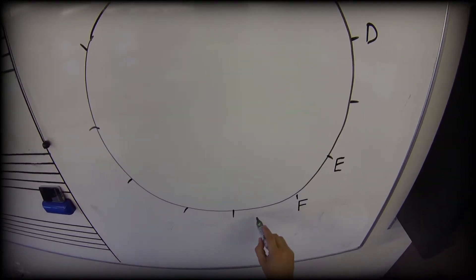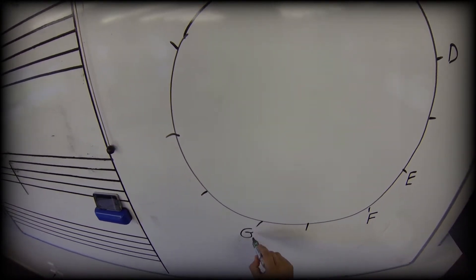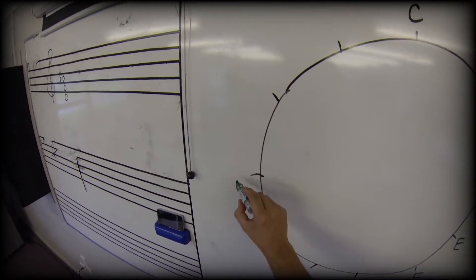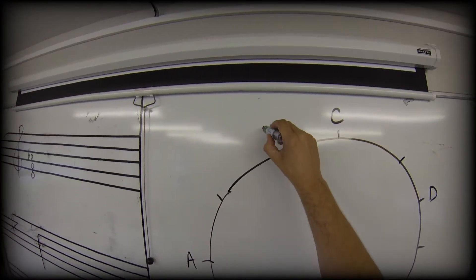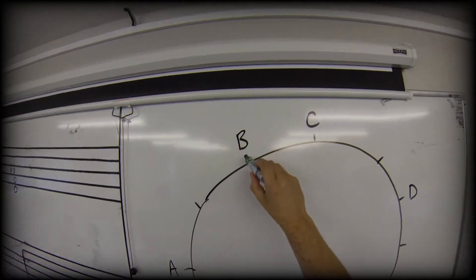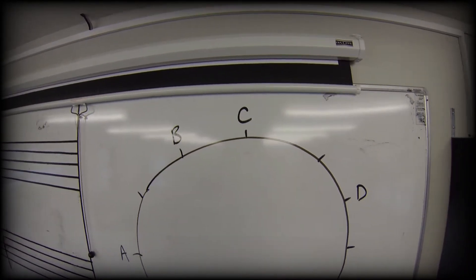We're going to go two steps to G, another two steps to A, another two steps to B, leaving our final transition one step to get back to C.